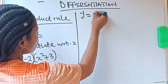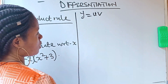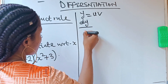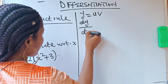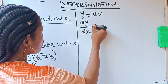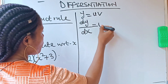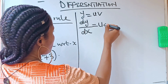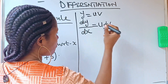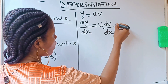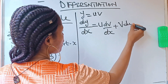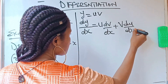It says that if y is equal to uv, and if you are to differentiate your y with respect to x — dy/dx — it's going to be equal to: write your u, then differentiate your v with respect to x.